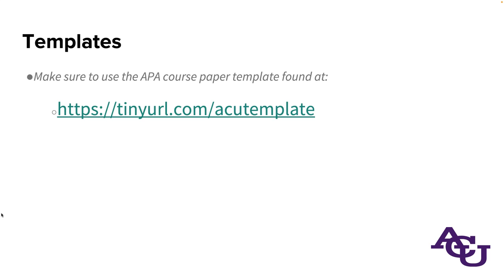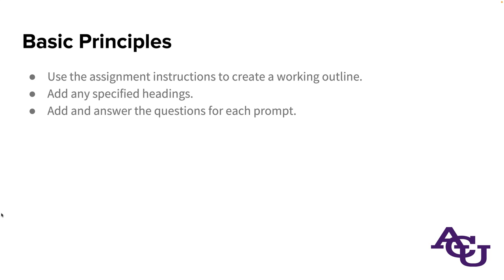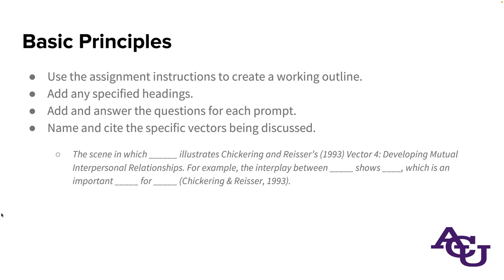At this point we're going to move into outlining and drafting. I strongly recommend grabbing a copy of the APA course paper template to follow along. Some basic principles: use the assignment instructions to create a working outline, add any headings specified for the assignment, make sure you add and answer the questions for each prompt portion, and especially for this assignment, name and cite the specific vectors that are being discussed. For example, if you're discussing a particular scene, tell us what events happened there — a timestamp would be great — to illustrate Chickering and Reiser's vector. If you didn't read that book specifically, make sure you are citing the actual source that you read.